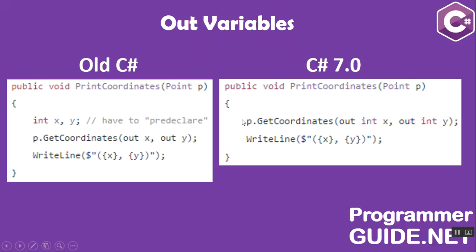However, in C# 7.0 we have added out variables — the ability to declare a variable right at the point where it is passed as an out argument. The declaration and the passing are both combined together when calling the function getCoordinates. Note that the variables are in scope in the enclosing block so that the subsequent line can use them. Many kinds of statements do not establish their own scope, so out variables declared in them are often introduced into the enclosing scope.